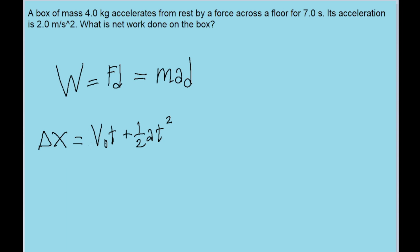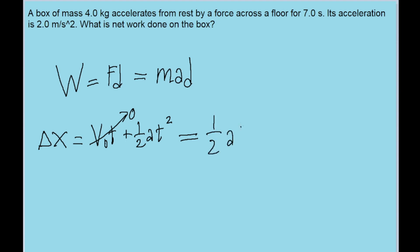Now the block accelerates from rest, so the initial velocity term goes to zero because v naught is zero, and the distance can be figured out using the remaining terms. If we plug in one half times acceleration times t squared, using two meters per second squared for acceleration and seven seconds for t, we find a distance of about 49 meters.